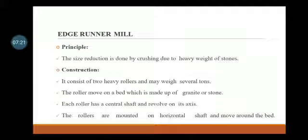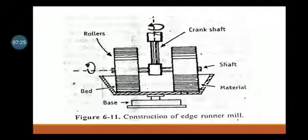The rollers are mounted on a horizontal shaft and move around the bed. This is the construction of edge runner mill. It consists of crank shaft, then rollers, bottom bed, and material shaft.